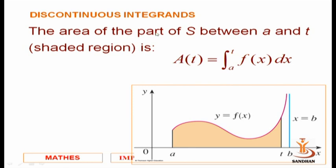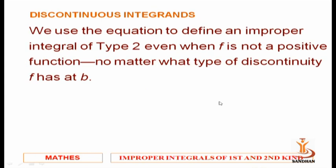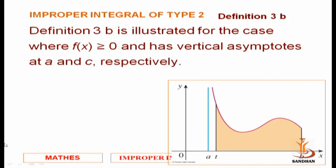The area of the part of S between a and t is given by the integral from a to t of f(x) dx. If x equals b is a point of singularity, we consider b minus something — let's say t or delta — so the integral from a to b of f(x) dx equals the limit as t tends to b⁻ of the integral from a to t of f(x) dx.